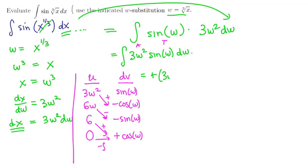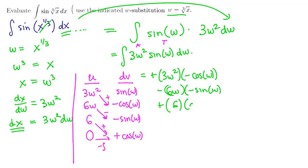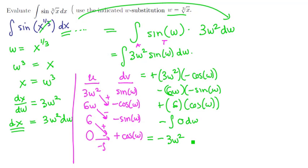We'll have positive 3w squared times negative cosine of w from the first arrow. Then negative 6w times negative sine of w from the second arrow. Then positive 6 times cosine of w from the third arrow. And then the antiderivative of 0, which contributes a constant.